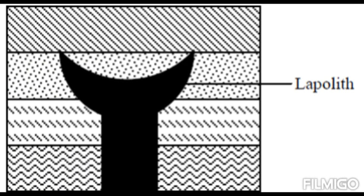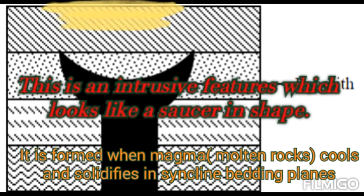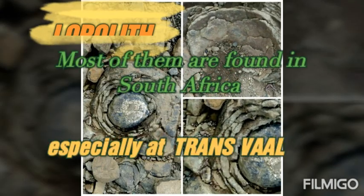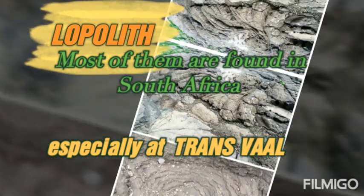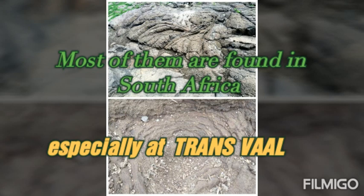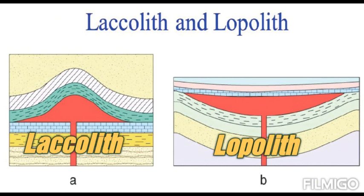The next feature is the lopolith. The lopolith is an intrusive feature which looks like a saucer shape. It is formed when the magma cools and solidifies in syncline bedding planes. Examples of lopoliths are found in New Africa. The difference between the laccolith and the lopolith is that the laccolith curves upward and the lopolith curves downward, as seen in the diagram.